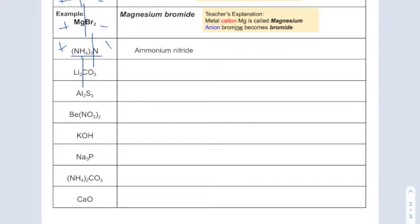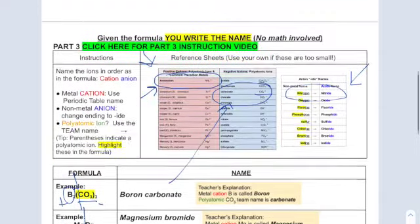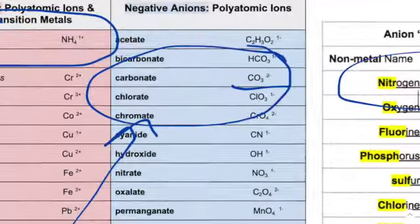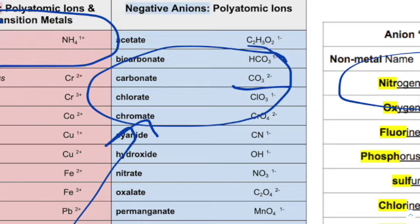And then we do, looks like we have a polyatomic again. So I'll name the first one just like it is on the periodic table. And the second one, we're going to look at the ion chart. So Li is lithium and CO3, I think we just did that one. There it is again, carbonate.